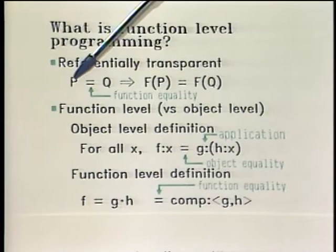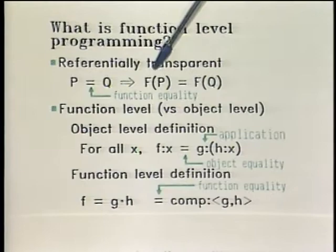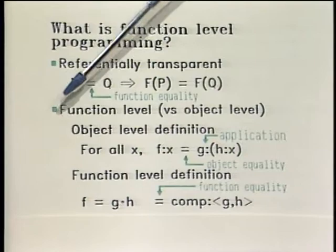What is function-level programming? It's a style of programming that regards programs as just functions, and it has the following properties. First, it is referentially transparent, which means that if I have two expressions P and Q that denote the same function, then I can replace in some larger program F of P every occurrence of P by Q and not change the meaning of the whole program.